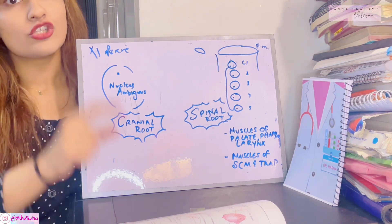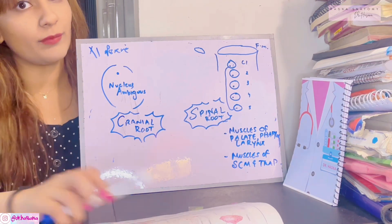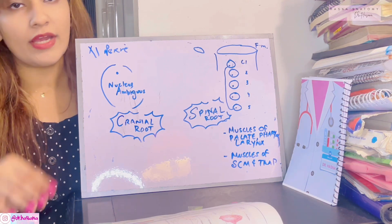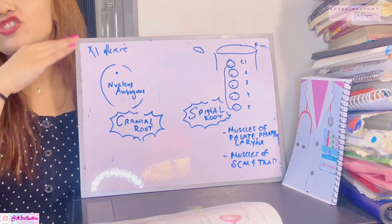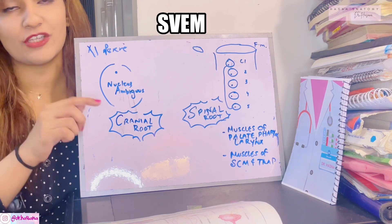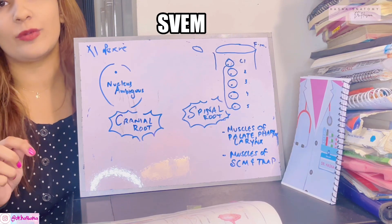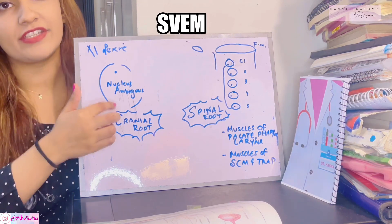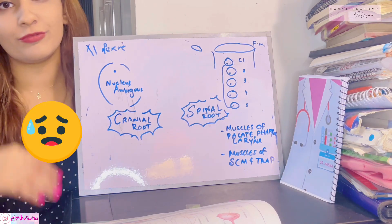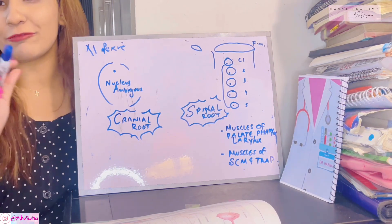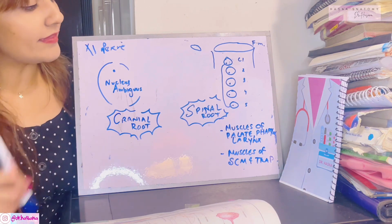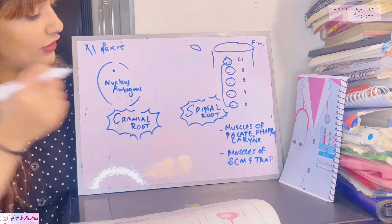The most interesting part about the accessory nerve is that it has both cranial and spinal roots. The accessory nerve only supplies muscles — it contains special visceral efferent (SVE) fibers and no other fiber types. This is a relief because we don't have to deal with all those various afferent and efferent fiber types.